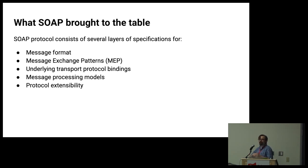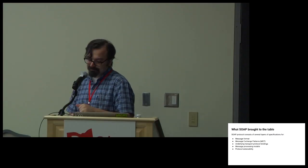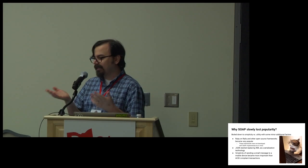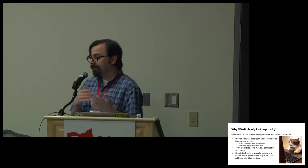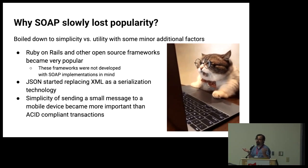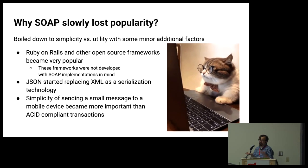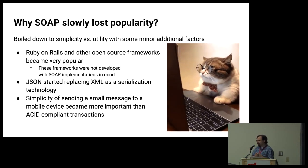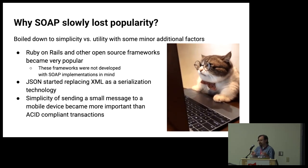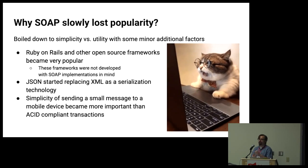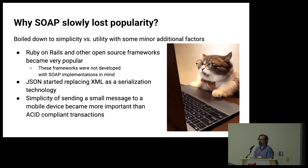Sadly, as time went by, SOAP kind of lost popularity. It came down to simplicity and utility — would you require everything that SOAP provided? Many new popular frameworks like Ruby on Rails were not developed with SOAP implementations in mind. JSON started replacing XML as a serialization technology. Sending simple and small messages became more important than complying to certain rules or standards. And that changed the whole tech industry — the mobile device arrived, everything got smaller, and REST came in.